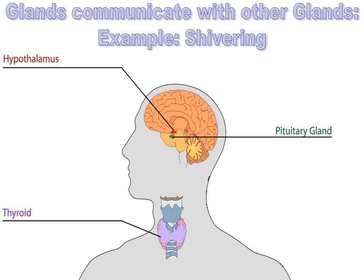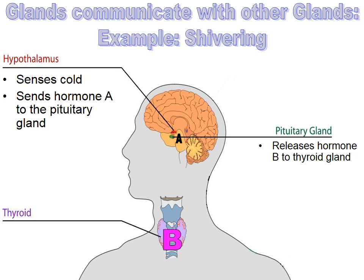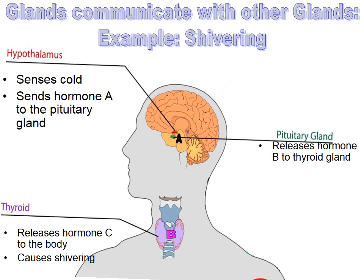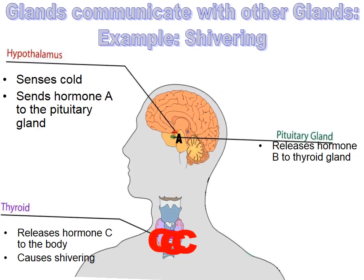Here's an example of how glands communicate with other glands. For shivering, three glands are involved: the hypothalamus, pituitary, and thyroid. The hypothalamus senses cold and releases hormone A to the pituitary gland. The pituitary receives hormone A and releases hormone B through the bloodstream to the thyroid. The thyroid receives hormone B and sends out hormone C throughout the body — and hormone C is what actually causes shivering, generating heat to warm the person.